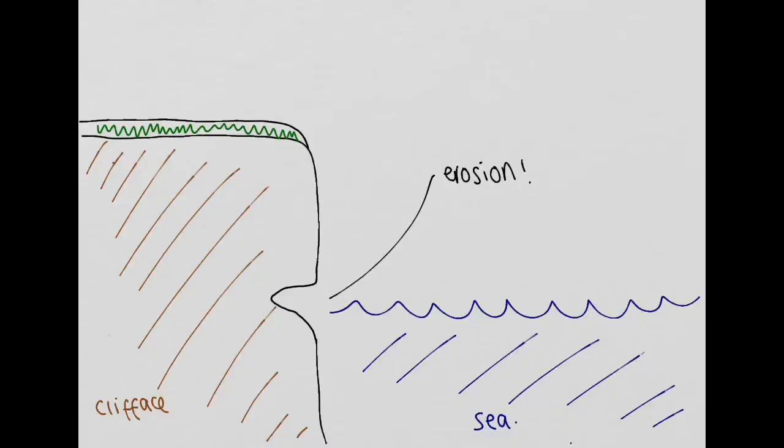Which is just a notch, or a gap essentially in the cliff face, that the sea has produced as a result of erosion. So we've got what we call a wave cut notch develop here. So this here is a wave cut notch.